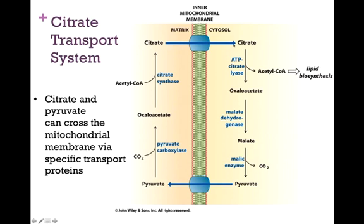Citrate then moves through its transporter from the matrix to the cytosol. It is converted back to oxaloacetate, and the acetyl-CoA that is liberated in that process is used in lipid biosynthesis. Oxaloacetate can then, through two steps, be converted back to pyruvate, and pyruvate through its transporter is moved back into the matrix. In other words, we have essentially here a shuttle system that moves acetyl-CoA units from the matrix to the cytosol, and that acetyl-CoA is used in lipid biosynthesis, as we'll examine in Chapter 17.